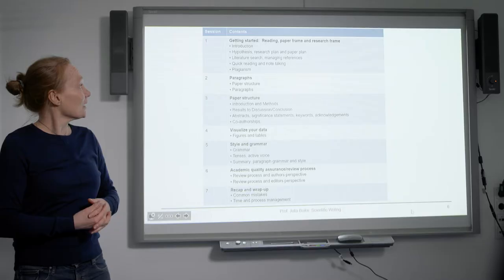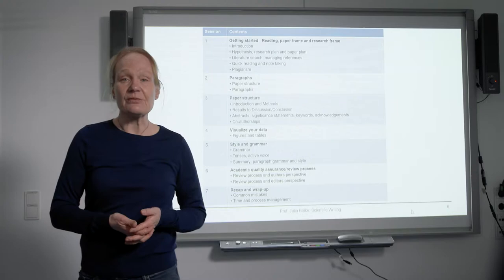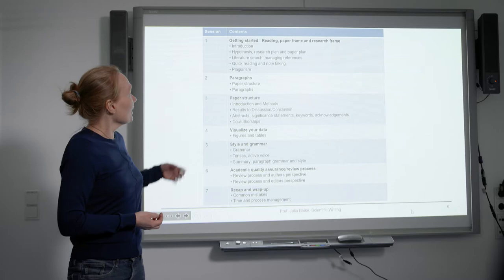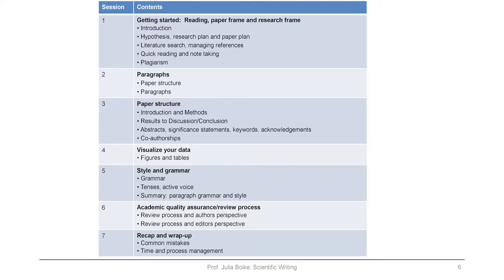Here's a brief outline of how the class is structured. There are seven sessions: session one covers getting started, reading papers, and the research frame; session two covers paragraph structure; session three covers paper structure; session four — taught by Inge — covers how to visualize your data; session five covers style and grammar; session six covers academic quality assurance and the review process, including what the reviewer, author, and editor each do; and the final session wraps up and covers time and process management.